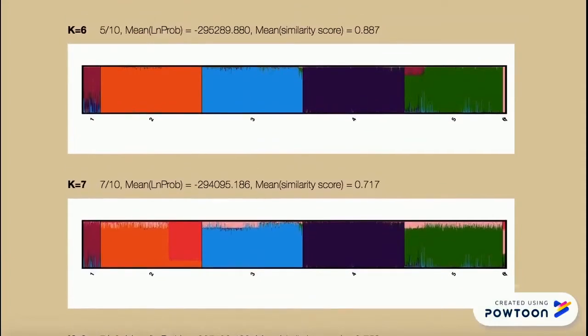We found that when K equals 6, we did not see much except that Oceania in the pale pink was clearly visible without any other populations.